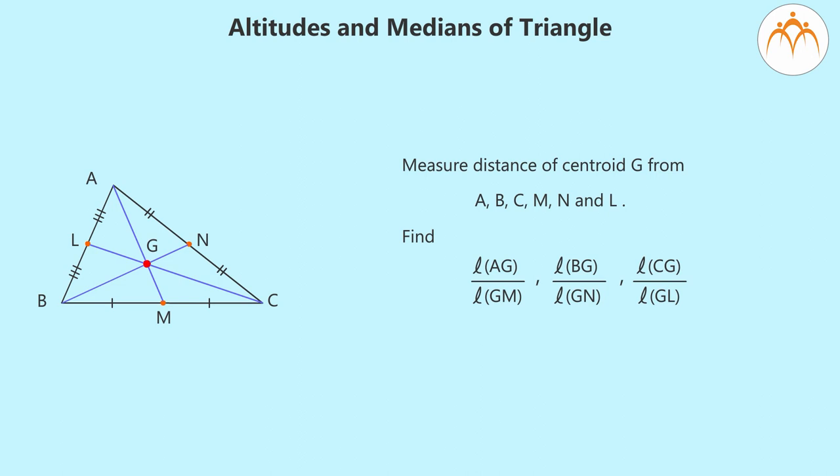Interesting fact: measure distance of centroid G from A, B, C, M, N, and L. Now, find length of AG divided by length of GM, length of BG divided by length of GN, length of CG divided by length of GL. What do you see?